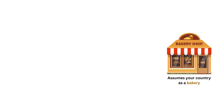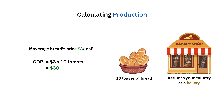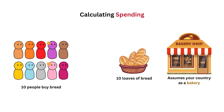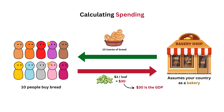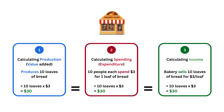A simple example: if a bakery produces 10 loaves of bread at $3 each, the GDP is $30. By calculating spending, if 10 people each buy one loaf for $3, that's also $30. By calculating income, the bakery earns $30 from selling 10 loaves. All three methods give the same result — $30 — even though they use different approaches.